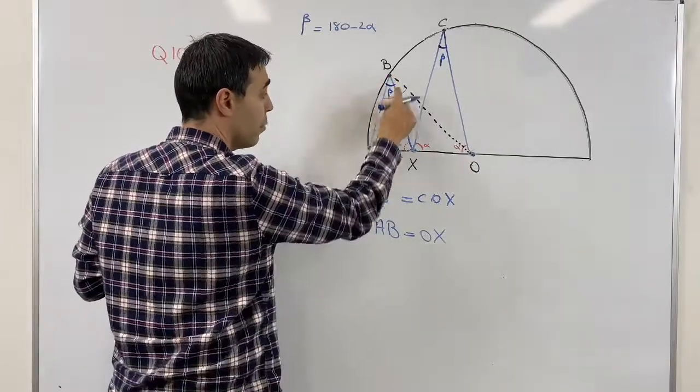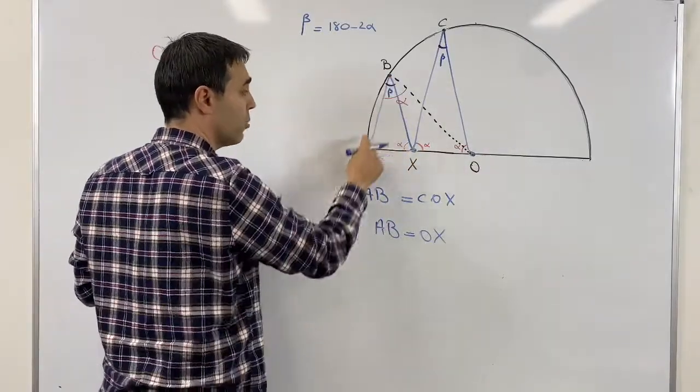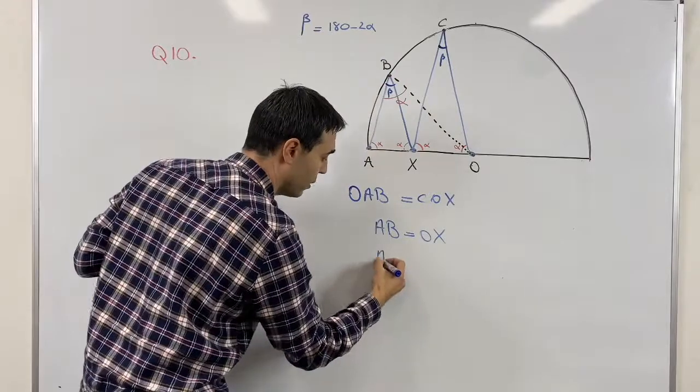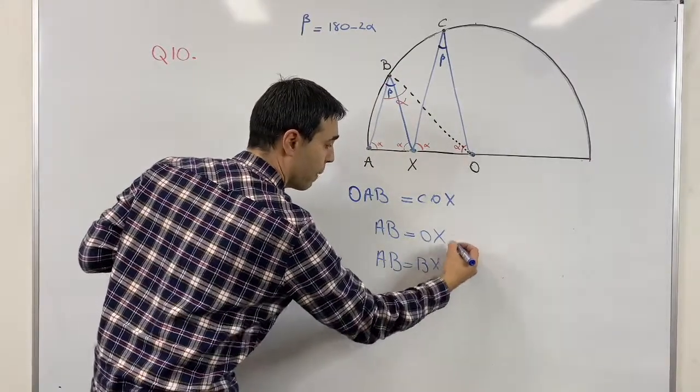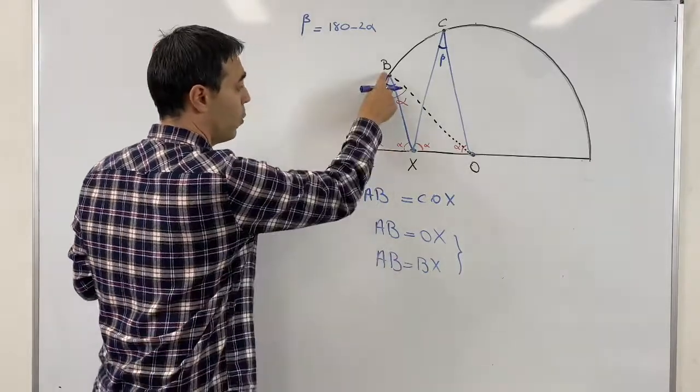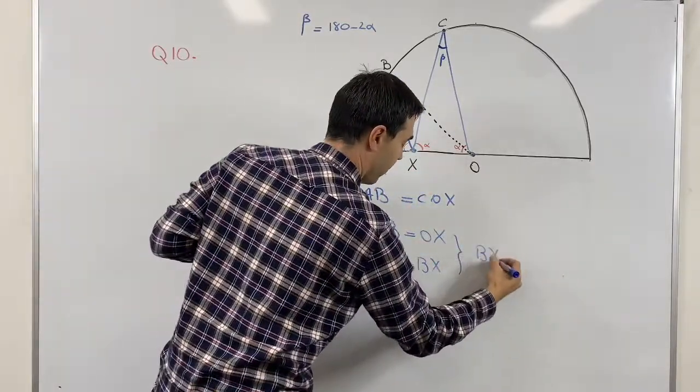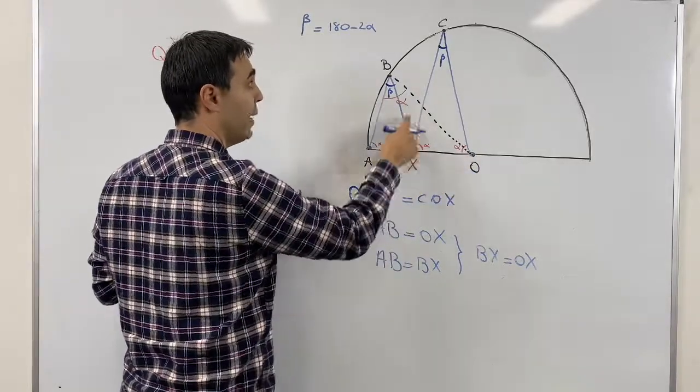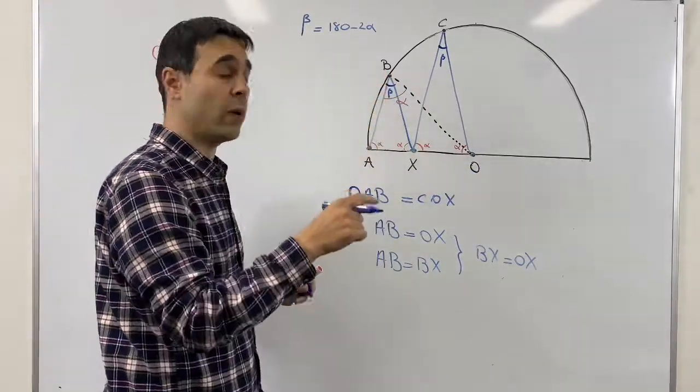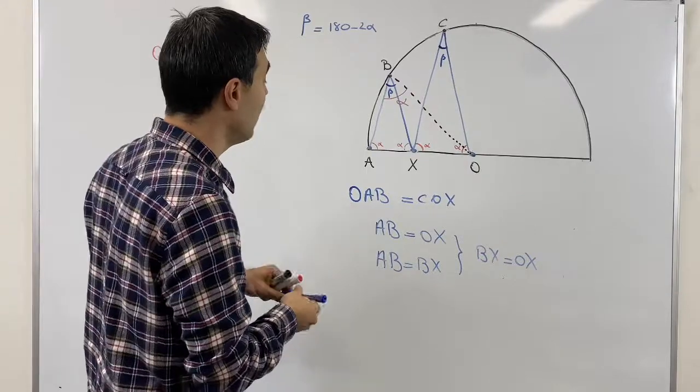Now we know AB equals BX because this triangle is isosceles. So we know AB equals BX. From these two equations we understand BX equals OX. Therefore OXB is also an isosceles triangle, and what we know is this angle...